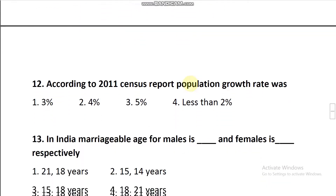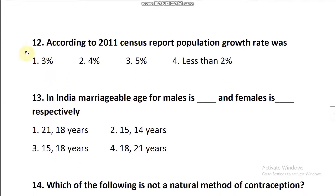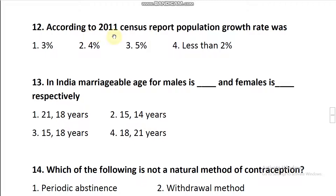Question number 12: According to the 2011 census report, the population growth rate was less than 2 percent — meaning for every 1000 persons, 20 members are added per year.